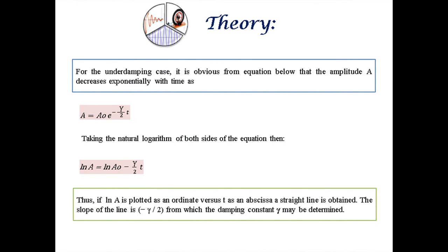For the underdamping case, where A equals A₀ e^(−γt/2), taking the natural logarithm of both sides: if ln(A) is plotted as the ordinate versus t as the abscissa, a straight line is obtained. The slope of the line is minus γ/2, from which the damping constant gamma may be determined.